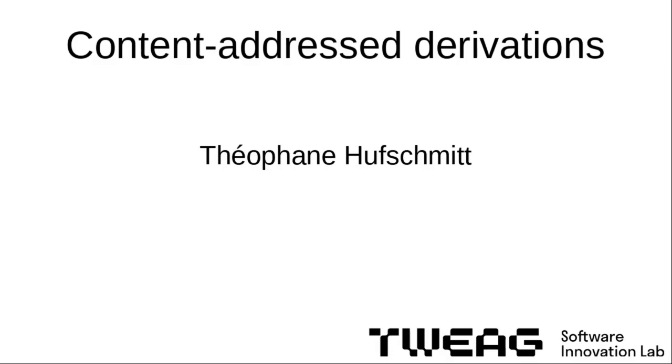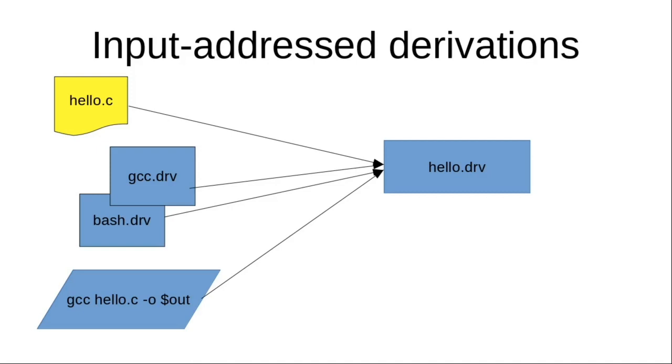let me get back to the classical derivations in Nix, which are input addressed derivations. The distinction between input addressed and content addressed derivations has to do with the way Nix computes the hash of the output path of the derivation—the output paths themselves which are the things with the big hash under /nix/store.